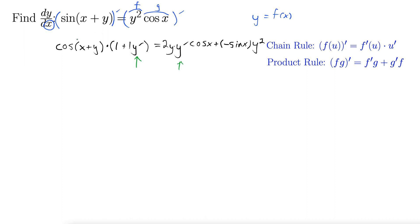Let's take this cos x y and distribute it through. And these steps that we're about to do will be the same for a lot of these implicit differentiation problems. So we have cos of x plus y plus y prime cos of x plus y equals all the stuff on the right.